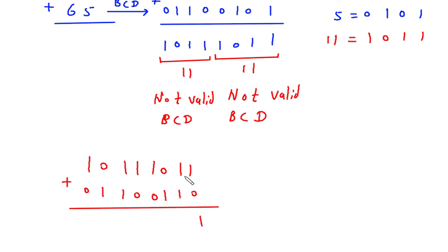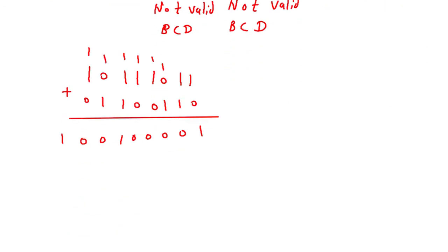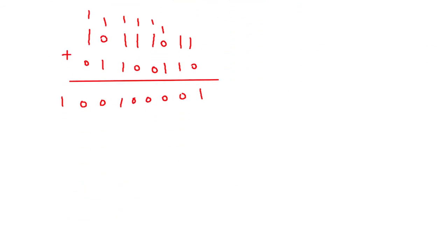Performing the addition with 0110 for both groups, bit by bit: 1 plus 0 is 1, 1 plus 1 is 0 carry 1, 1 plus 1 plus 1 is 1 carry 1, and continuing through the bits. After the addition, we can see that a carry is generated.